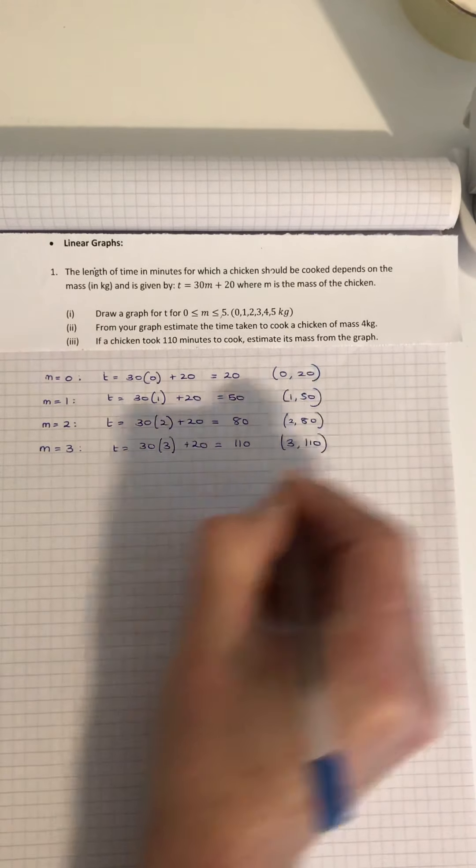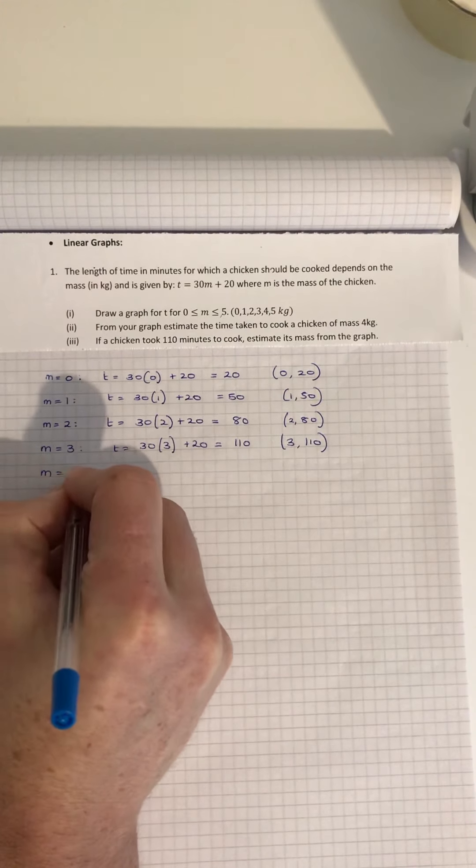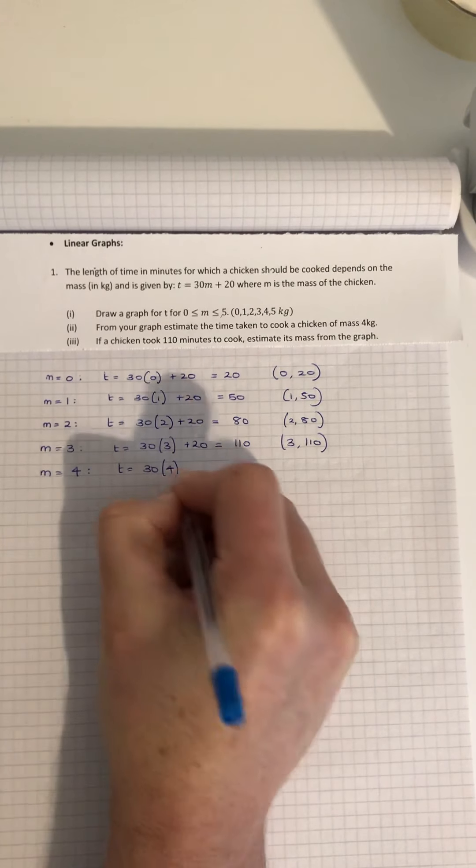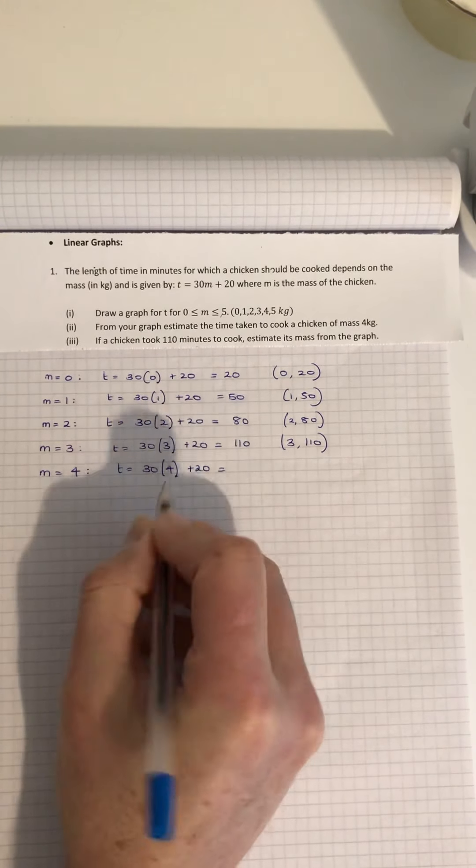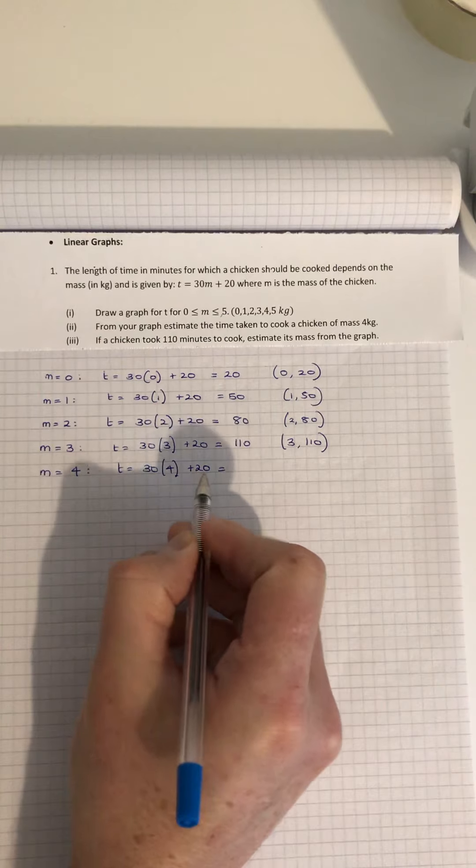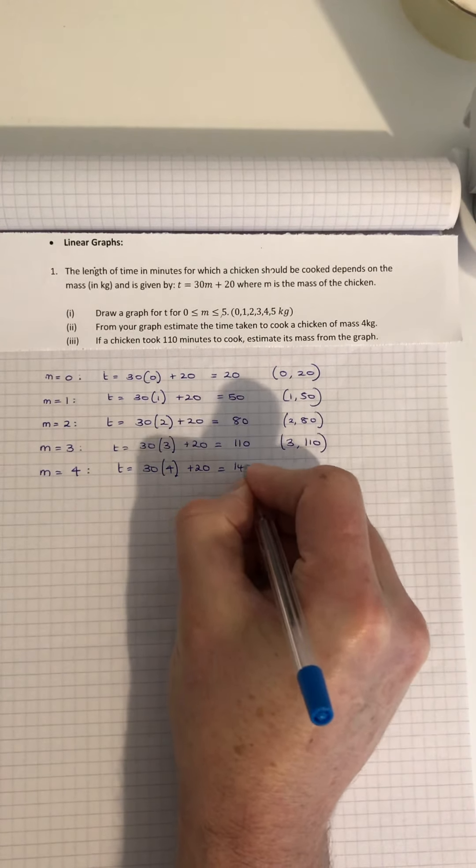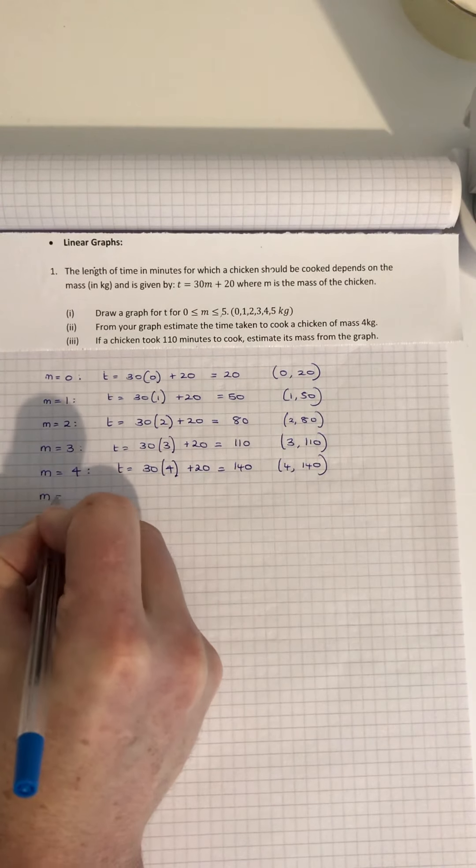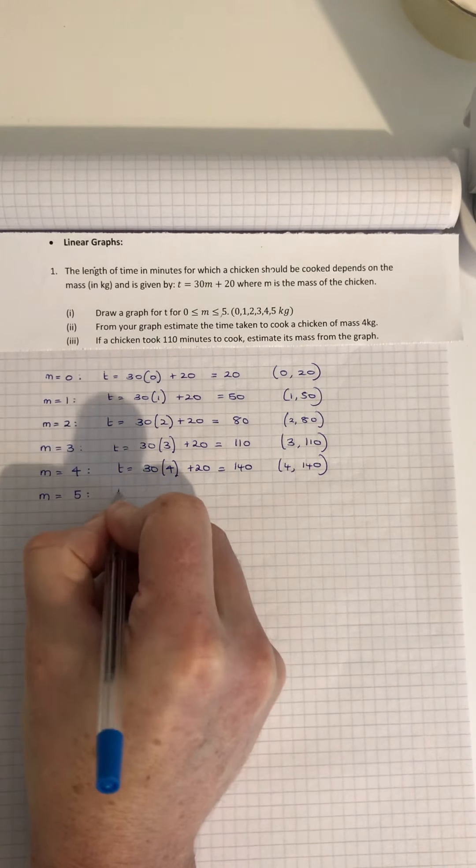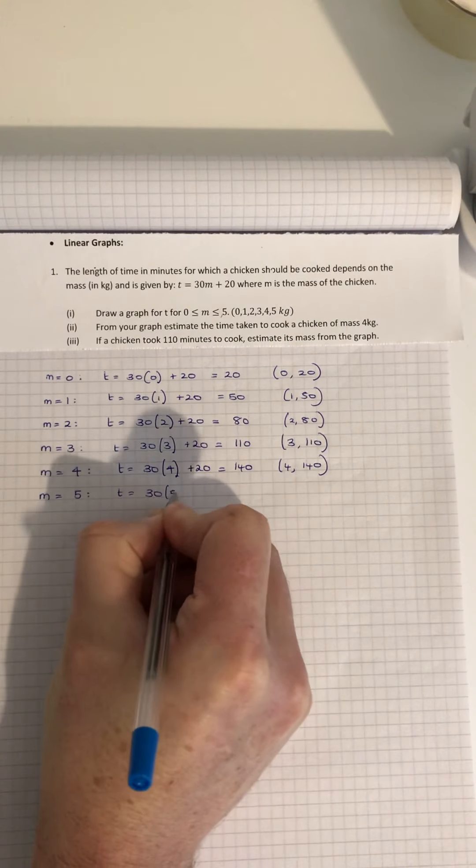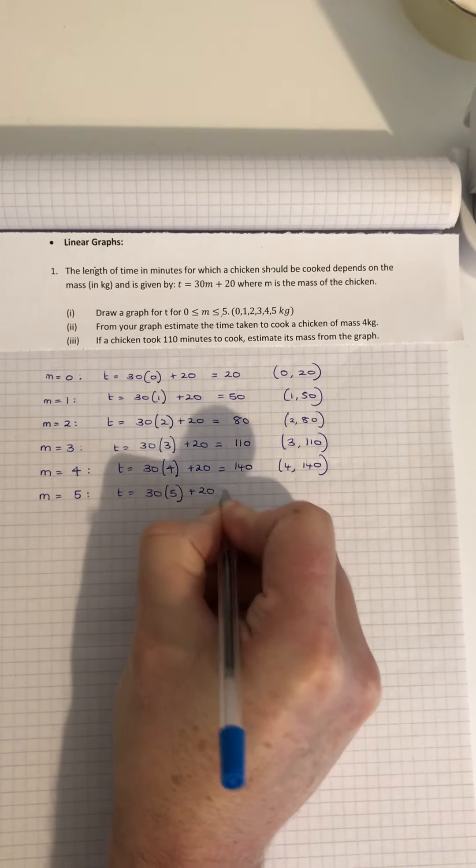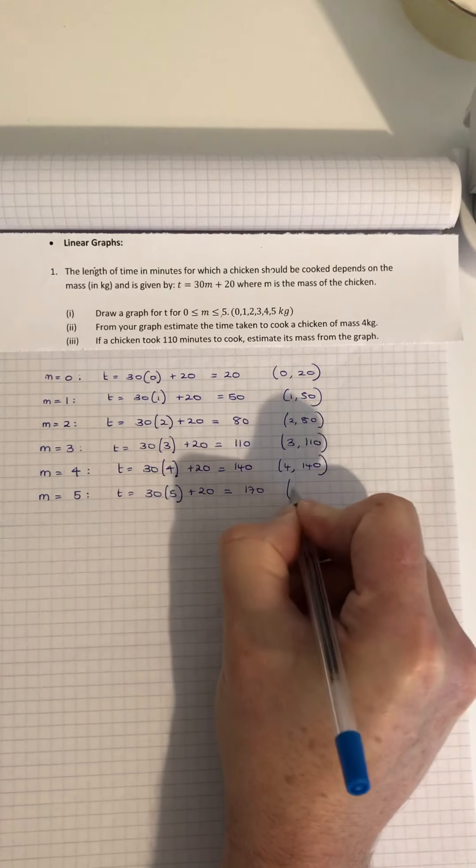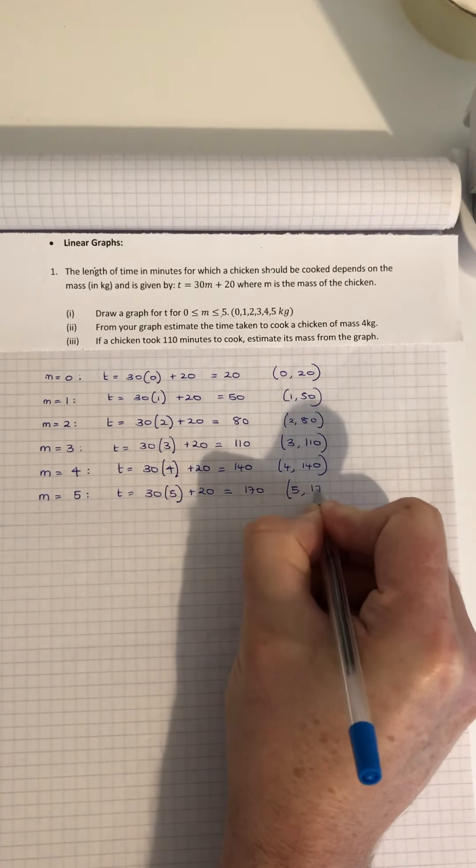30 times 4 is 120, plus 20 is 140. So 4 kg, 140 minutes. If m is 5 kg, the time is 30 times 5 plus 20, which is 150 plus 20, which is 170 minutes. So 5 kg, 170 minutes. A 5 kg chicken equals 170 minutes cooking time. Now we want to draw that graph.